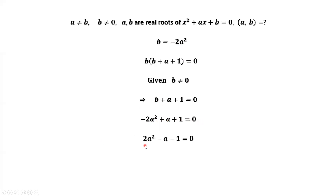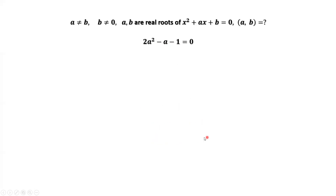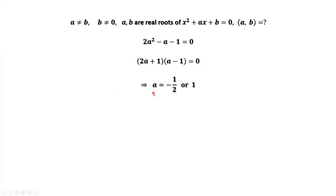This implies 2a squared minus a minus 1 equals zero. Factoring the left-hand side gives 2a plus 1 times a minus 1 equals zero, which implies a equals negative one-half or a equals 1.